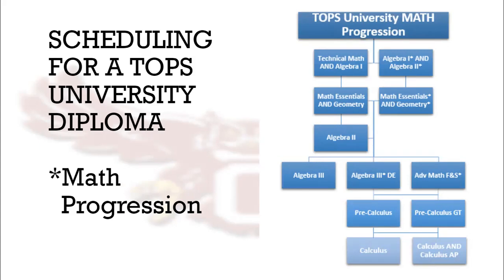All 9th grade students then take Math Essentials and Geometry their 10th grade year. The students who have taken Algebra 2 already in 9th grade then go on to take Algebra 3, Algebra 3 Dual Enrollment, or Advanced Math Functions and Statistics. Those 9th graders who took Technical Math and Algebra 1 in 9th grade, after Math Essentials and Geometry in 10th grade, then go on to take Algebra 2 in the 11th grade.